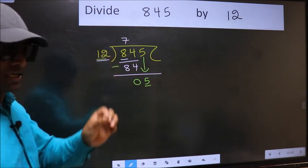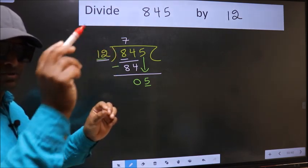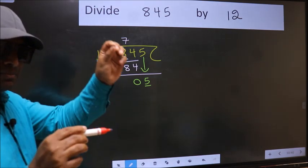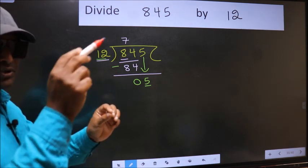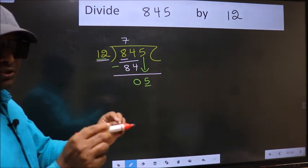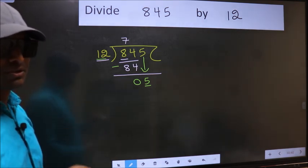Which is wrong. I repeat: bringing the number down and also put dot take 0 - both at the same step, you should not do.